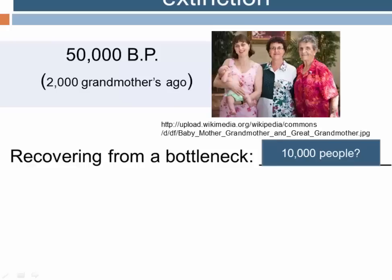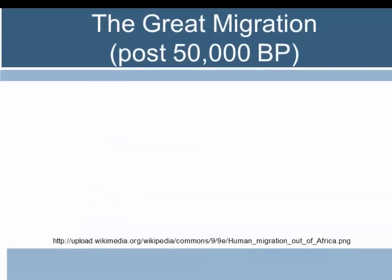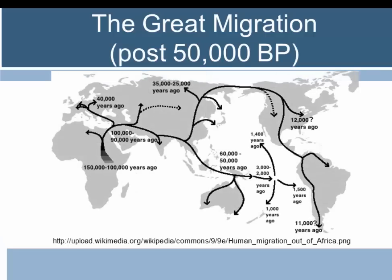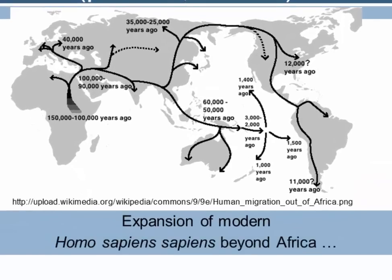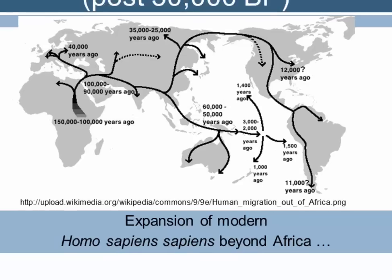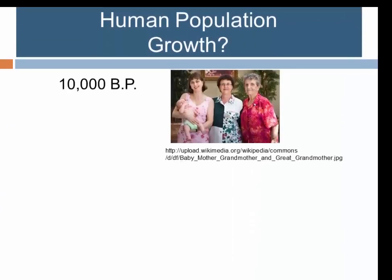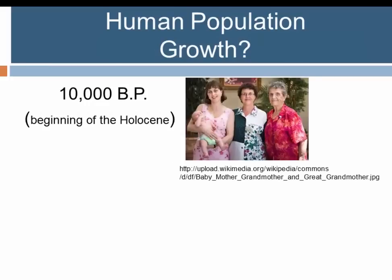After 50,000 years ago, humans started to expand quite rapidly beyond sub-Saharan Africa into Europe, East Asia, Australia, and the Americas. This is sometimes called the Great Migration. An interesting question is how much did the human population expand in the course of this Great Migration — over 40,000 years, from 50,000 years ago to 10,000 years ago.